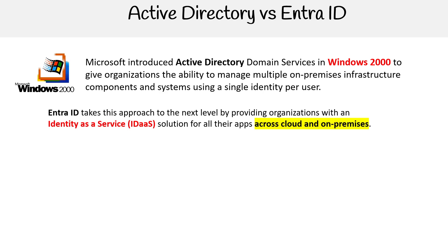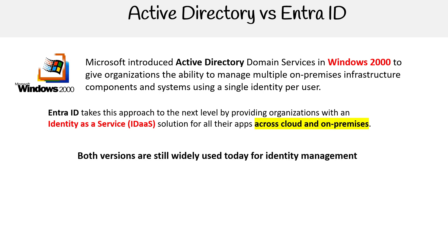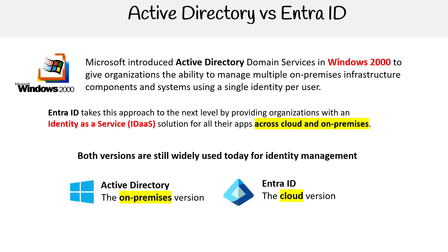Entra ID takes this approach to the next level by providing organizations with an identity as a service — an IDaaS solution for all their apps across cloud and on-premise. Both versions are used widely today for identity management. Active Directory is used for on-premise, and Entra ID is the cloud version — fully managed in the cloud.